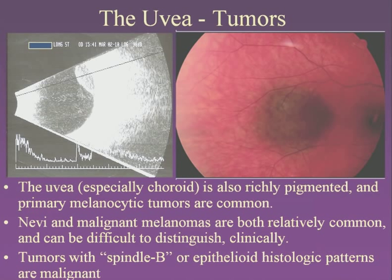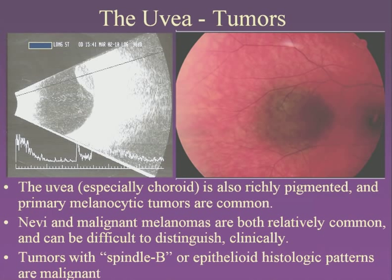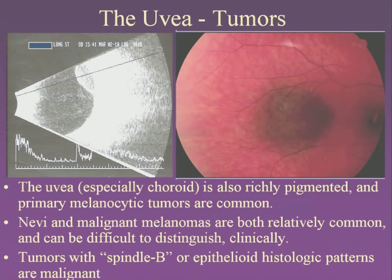Because the choroid is so pigmented with a very high level of melanocytic cells, melanomas are also common there. The problem with melanomas in the eye is that we can't tell when they're benign nevi versus malignant melanomas the same way a dermatologist can — cutting the tumor out would blind the eye. We use ultrasound to measure the thickness of the tumor; studies have shown that thickness along with other features is directly correlated with malignancy. Things greater than three millimeters are almost certainly malignant and deserve close observation if not treatment.